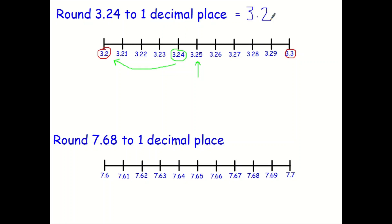But why is that? Well, if you look at this digit — the 4, which is in the second decimal place — you have to think back to that little rhyme. Five or more, let it soar; four or less, let it rest. This is 4, so I'm going to let it rest at 3.2.